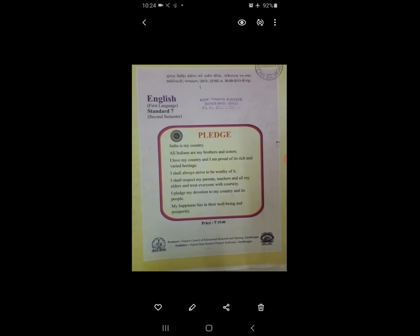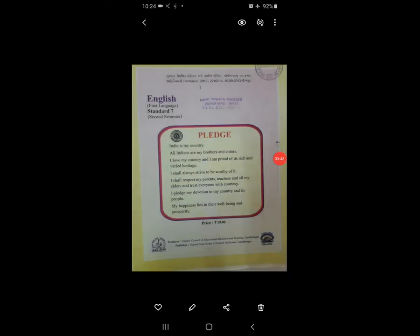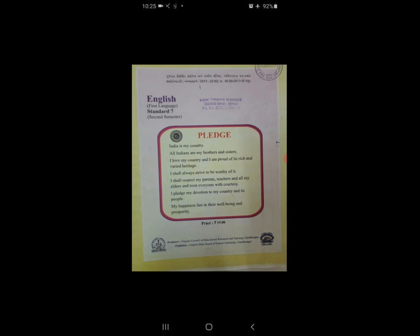उसके बाद में है Activity 6: do you know where does the energy come from? कहाँ से energy आपको मिलती है? We use electricity in almost all activities of life directly or indirectly — हमारी रोज़ की ज़िंदगी में directly या indirectly रोज़ electricity का use करते हैं. Electricity is a form of energy — वो एक energy का स्त्रोत है. Producing energy is not easy — कोई भी energy produce करना एकदम easy बात नहीं है.